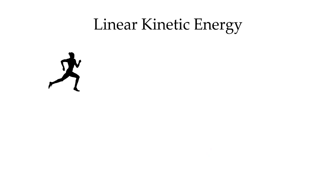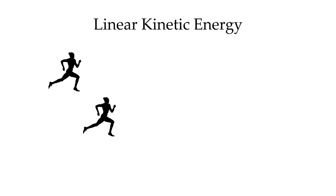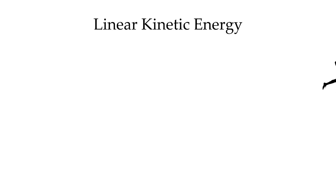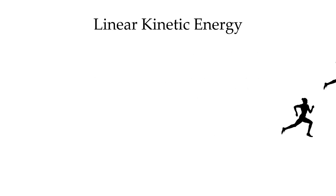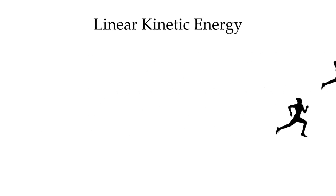If a runner starts and she has a certain amount of velocity, she's going to have a certain amount of linear kinetic energy. If at another point in time she's going faster, she's going to have a greater amount of kinetic energy. Similarly, if she starts to run more slowly, she's going to have a decrease in her kinetic energy because she has a decrease in her velocity.